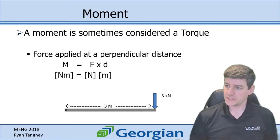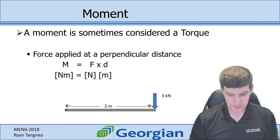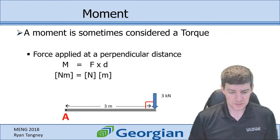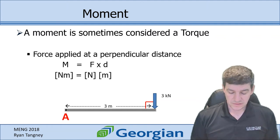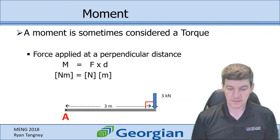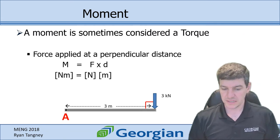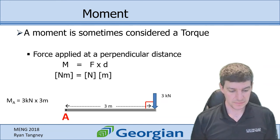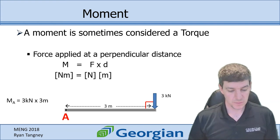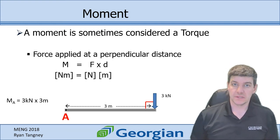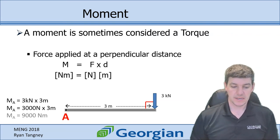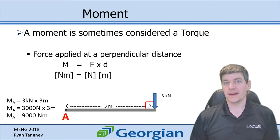Here's a section of beam that's three meters long, with a three kilonewton force pushing down. First, we assign a reference point — let's take the moment from that end. We confirm the force is acting perpendicularly, going straight down, which is perpendicular to the three-meter distance. The moment at A equals 3,000 newtons times 3 meters, which gives us 9,000 newton meters.